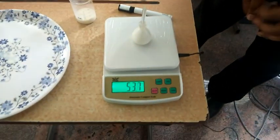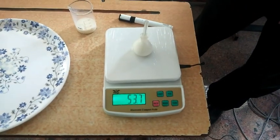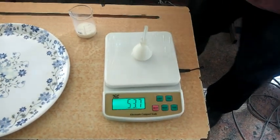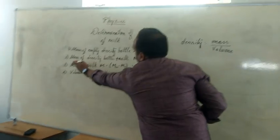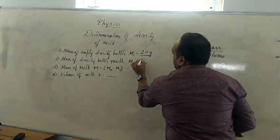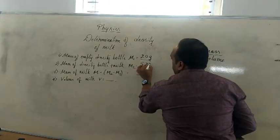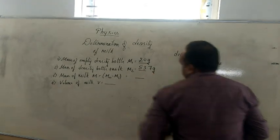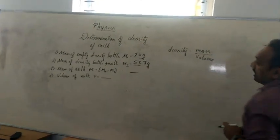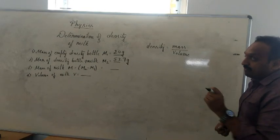The reading is 53.7. So the mass of density bottle plus milk is 53.7 gram. Now I should find the mass of the milk alone.